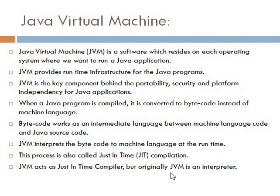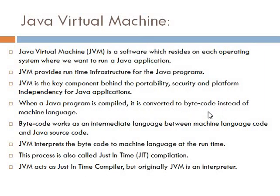Originally, the JVM was known as an interpreter, so you can say that JVM acts as both a compiler and an interpreter. The JVM acts as a just-in-time compiler when the Java program is compiled and converted into bytecode, and then it acts as an interpreter when it translates the bytecode to machine language at runtime.